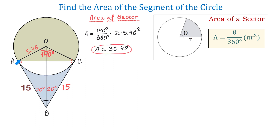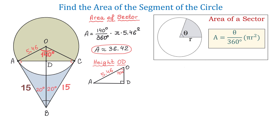To find the area of triangle AOC, we need the base and the height. Let point D be the foot of the height. To find the height OD, we use triangle OAD. In this right triangle, one acute angle is 70 degrees and the hypotenuse is 5.46. Since OD is the adjacent side for this angle, we use the cosine function: cosine of 70 degrees equals OD divided by 5.46. So OD equals 5.46 times cosine of 70 degrees, which is approximately 1.87.